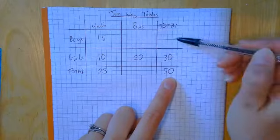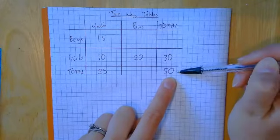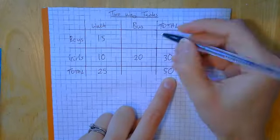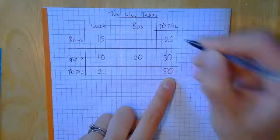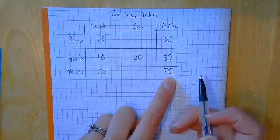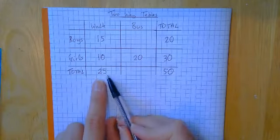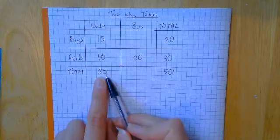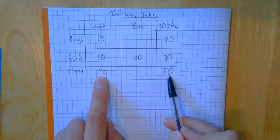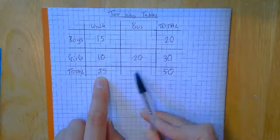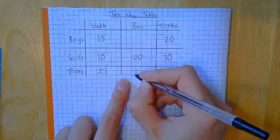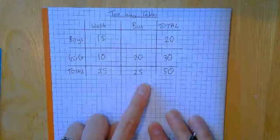So have a look here. The number of boys and the number of girls must add up to 50. And I've got 30 girls, which means I must have 20 boys. And if I look here, well I've got 25 people that walk, and I've got 50 people in total. 50 take away 25 is 25.